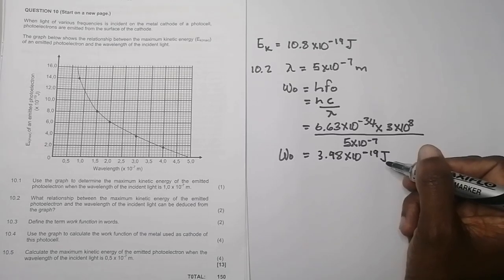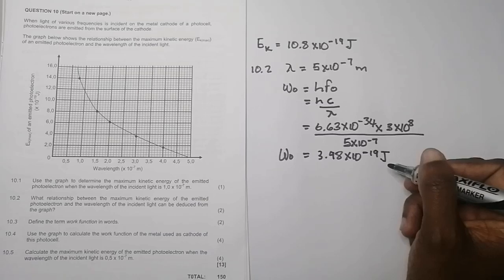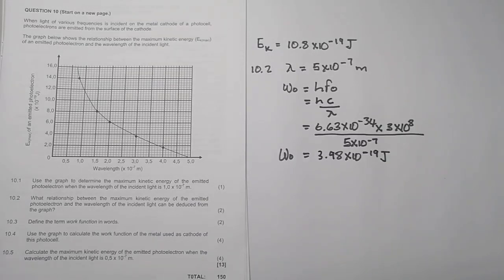And I get a, yeah, there's the answer that I get: 3.978. So I'll just say 3.98 times 10 to the power minus 19 joules. And that's our work function. And the final question, they say calculate the maximum kinetic energy of the emitted photoelectron when the wavelength of the incident light is 0.5 times 10 to the power minus 7.